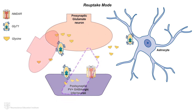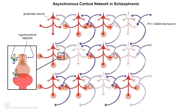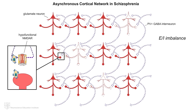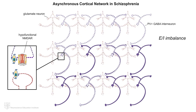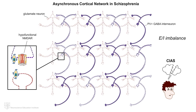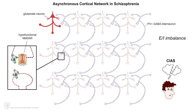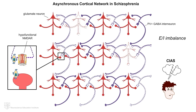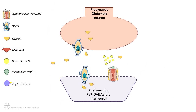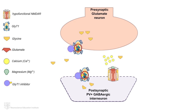With its concentrated location in cortical areas where NMDAR hypofunction is thought to underlie excitatory-inhibitory, or EI, imbalance, network asynchrony, and consequent CIAS, GlyT1 may provide an ideal therapeutic target for increasing glycine specifically in areas where a boost of glycine may be beneficial. The pharmacological inhibition of GlyT1, but not GlyT2, using a selective GlyT1 inhibitor has been shown to result in a rise in cortical glycine levels.